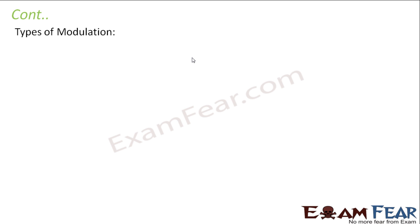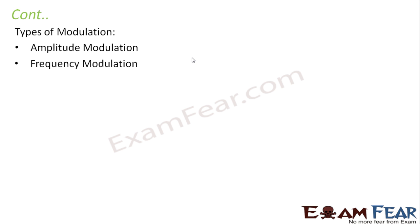Now we will talk about the different types of modulation. There are three types: amplitude modulation, frequency modulation, and phase modulation. We will discuss each of these types in detail shortly, covering exactly how each type of modulation works.